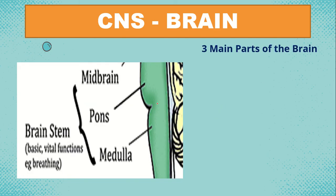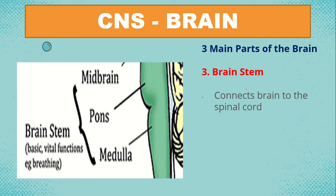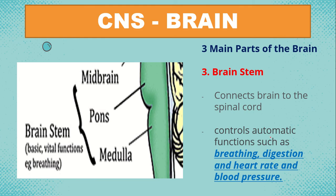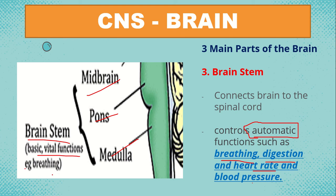The last main part is the brainstem, also known as the medulla oblongata. It connects the brain to the spinal cord and controls automatic functions such as breathing, digestion, heart rate, and blood pressure. These automatic functions are things our body controls without conscious effort. The brainstem includes the pons and the medulla, and a basic vital example is breathing.